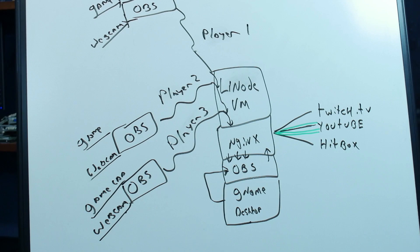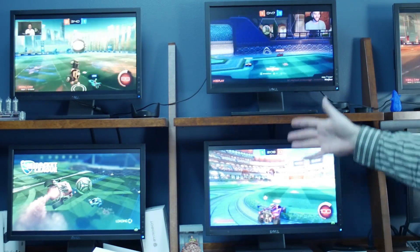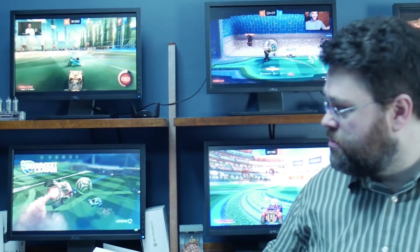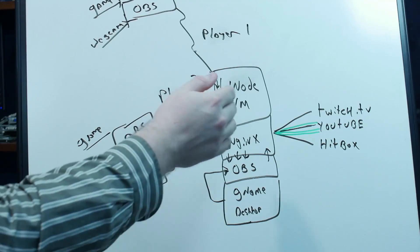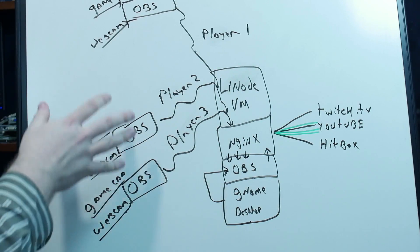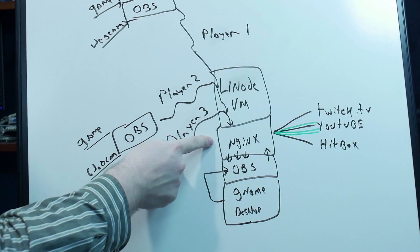These OBS installations are modified with the video plugin if you're using Windows - Linux will do that natively. They're just RTMP streaming raw streams directly into our Nginx running on this VM. All of these video streams travel out over the individual player's internet service providers. We try to stream at about 3 to 5 megabit, which is what YouTube, Hitbox, and Twitch all recommend. But instead of streaming directly there, we're actually streaming to this virtual machine out on the internet running Nginx.